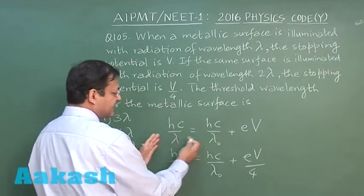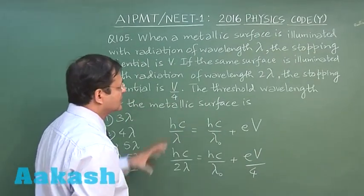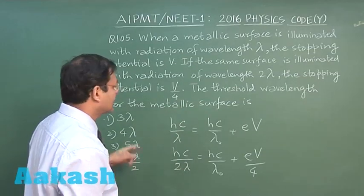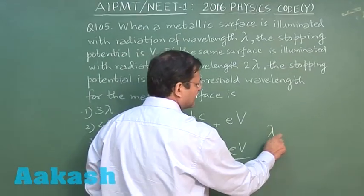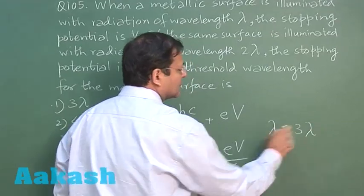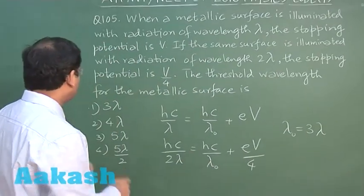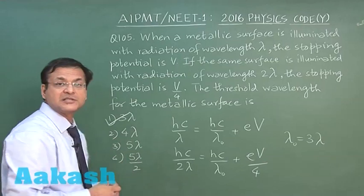So you can shift it this side and divide. You can solve these two simultaneously to get the value of lambda naught. So if you solve, lambda naught will be coming out to be equal to 3 lambda. So for that matter I will be marking answer 1 for this question 105.